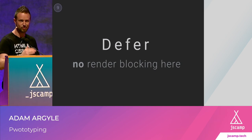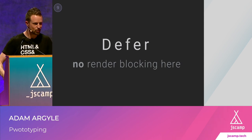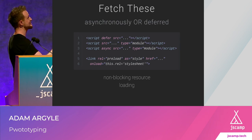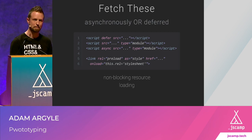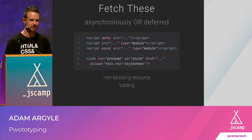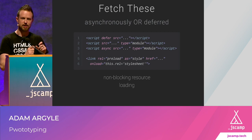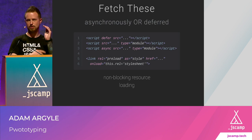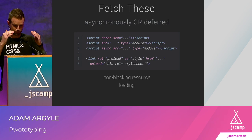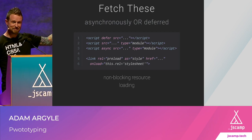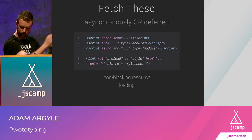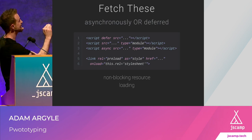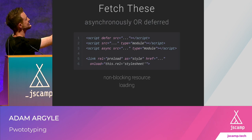We can defer our assets — no render blocking. Fetch these asynchronously or deferred. CSS and JavaScript will block as soon as they're discovered — if it finds a CSS file, it can't move until it fetches it. But not if you use defer or async. A type module script is deferred by default — not render blocking. There's also a clever hack on lines five and six: you combine preload to get an async CSS file loaded. You tell it to fetch the file, put it in back pocket, but when done secretly change the tag to a stylesheet — that's how you get execution with preload.